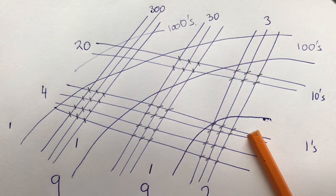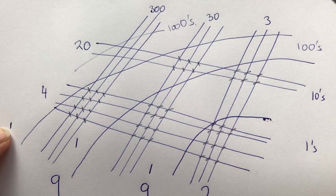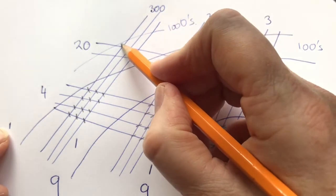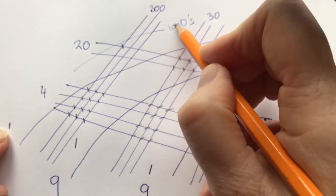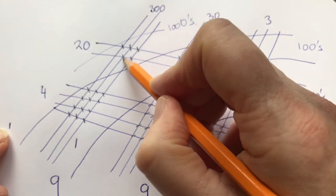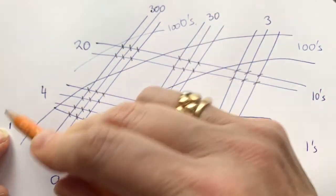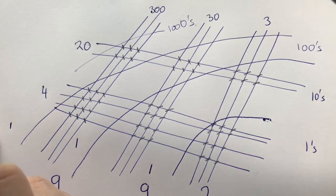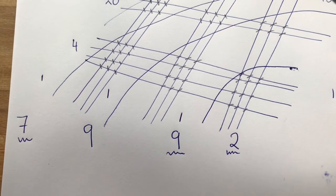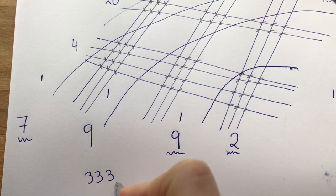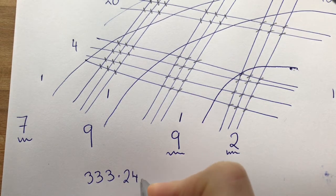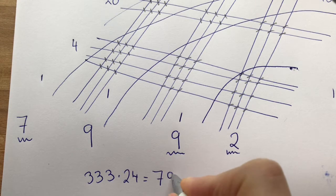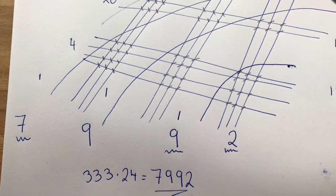Then we had 1,000 which we add to the crosses we have in our thousands block: 1, 2, 3, 4, 5, 6 — 2 by 3 is 6 — plus the one we had to carry over. So the answer to our multiplication of 333 multiplied by 24 is 7,992 with the Japanese line method.